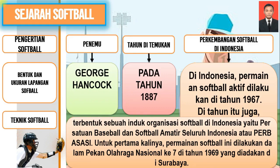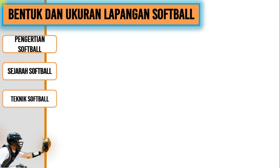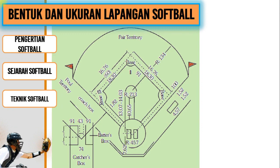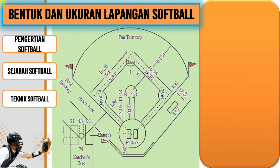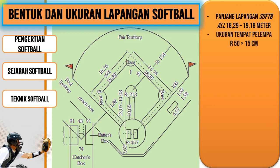Kita lanjut untuk materi yang ketiga dalam pertemuan kali ini, yaitu bentuk dan ukuran lapangan permainan softball. Untuk bentuk dan ukuran lapangan, kalian dapat lihat pada gambar berikut ini. Dari ukuran tersebut, kita catat bahwa panjang lapangan softball yaitu 18,29 meter sampai 19,18 meter. Kemudian untuk ukuran tempat pelempar yaitu 50 x 15 meter.